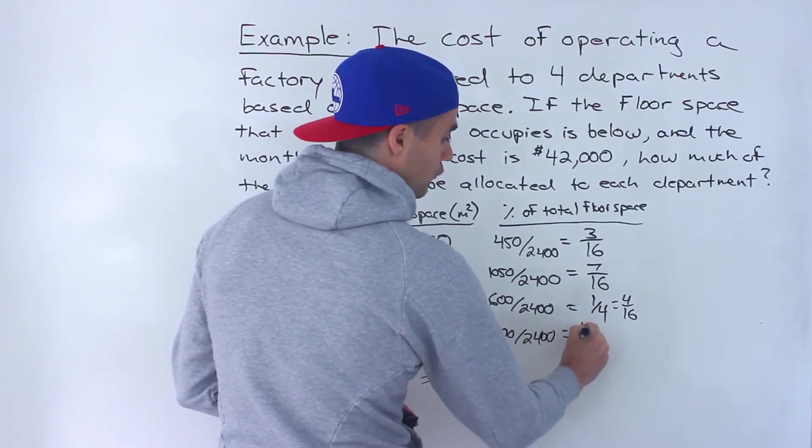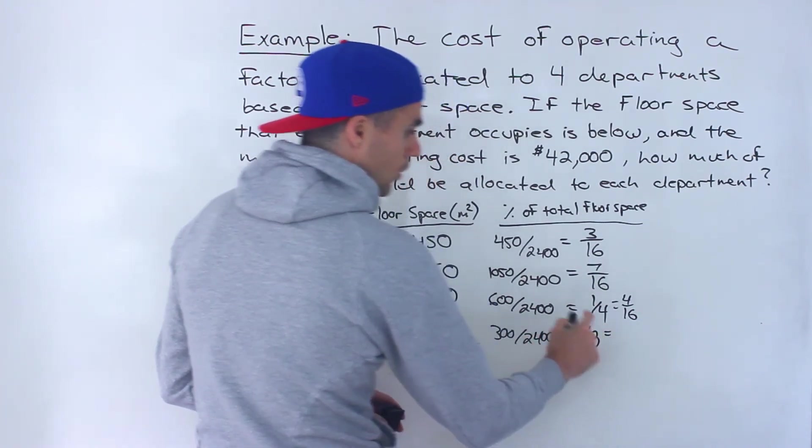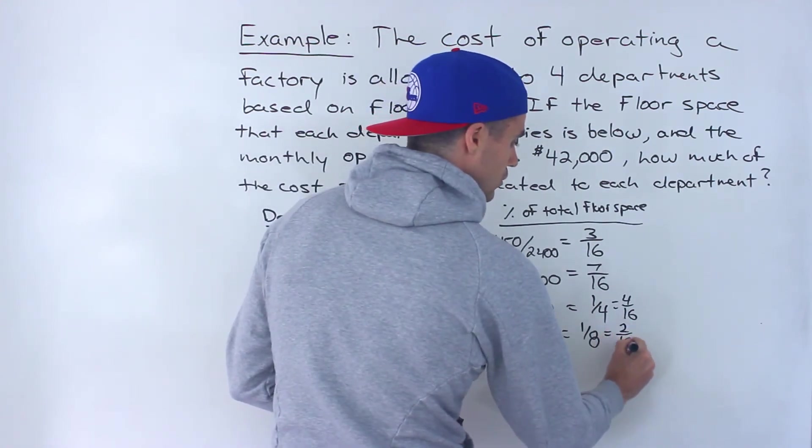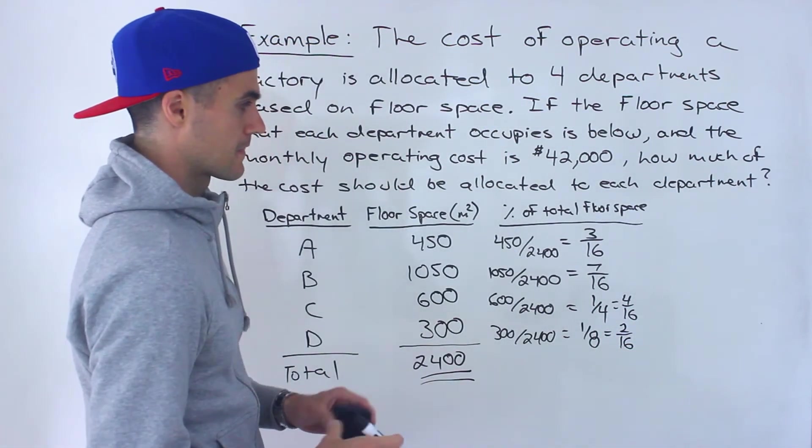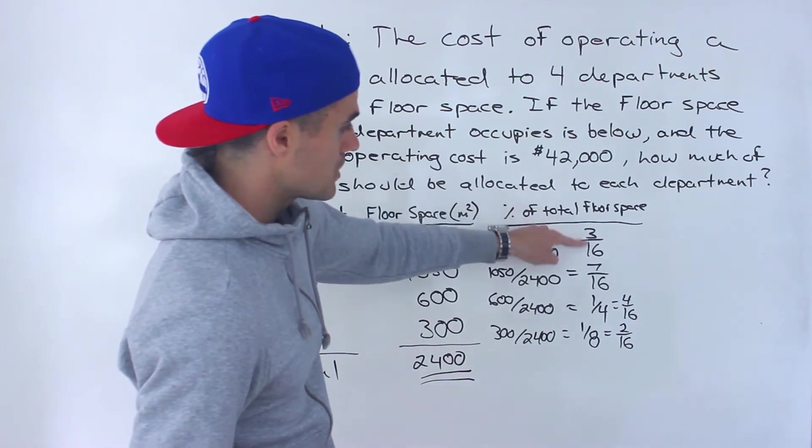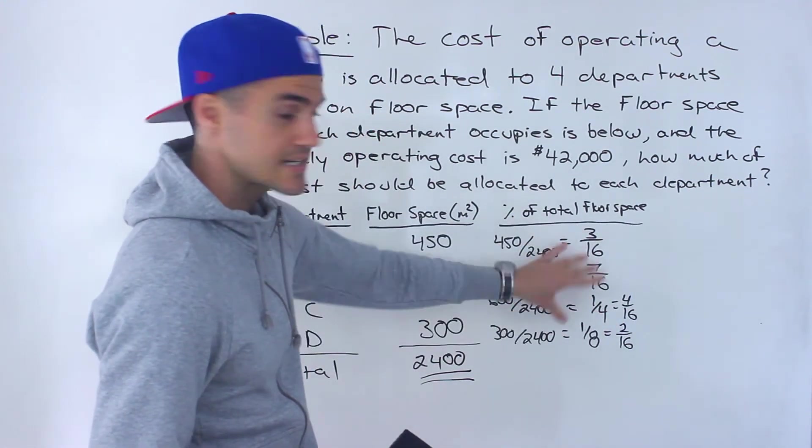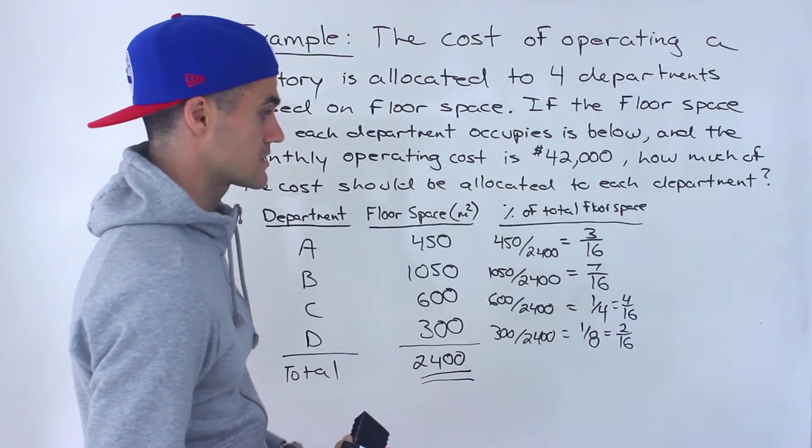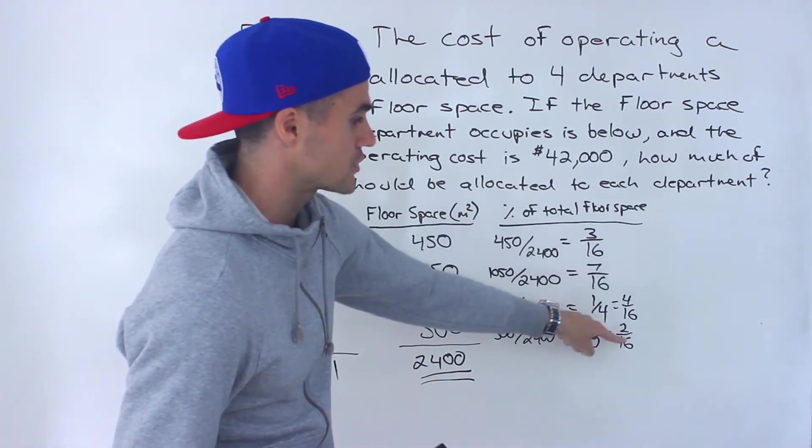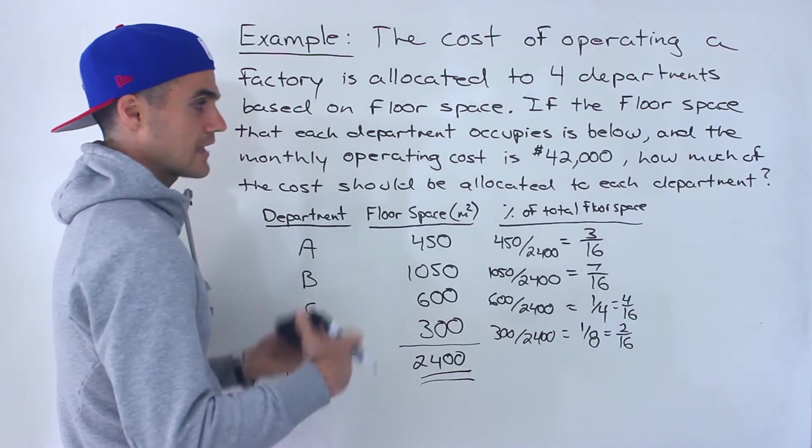And then 300 over 2,400, that would be 1 over 8, or 2 over 16. And notice that 3 plus 7 is 10 plus 4 is 14 plus 2 is 16. 16 over 16 gives us 1. So we could be pretty confident that these fractions here are correct.